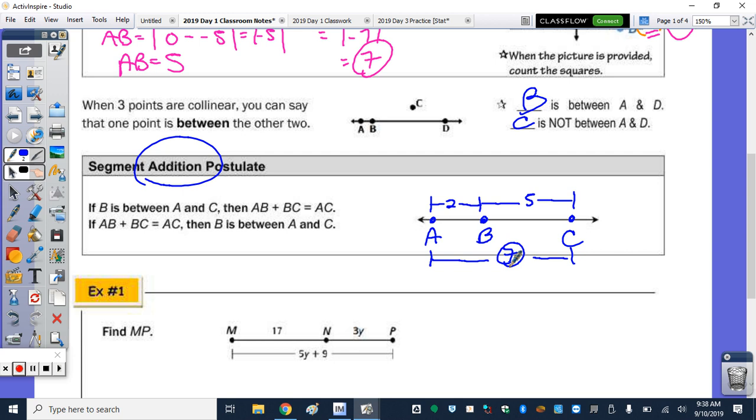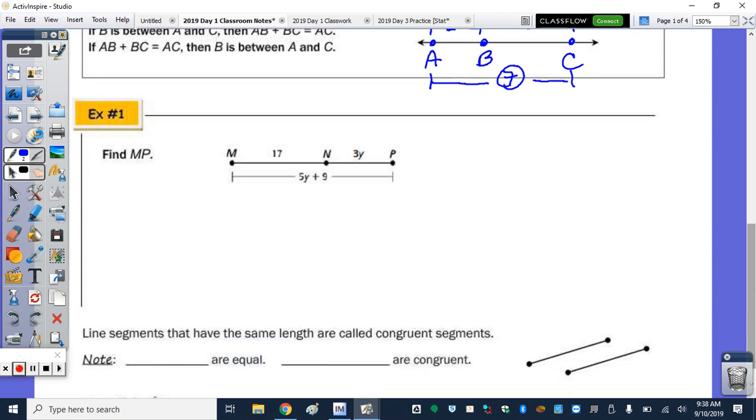If you look at that first example, I'm going to give you a minute to come up with the equation that we would use to find length mp. In order to find length mp, which is the length of the whole segment, we need to know y. So what would be the equation that we would write in order to solve for y, to then therefore substitute in to find length mp? So we have the whole length. The whole length from m to p algebraically is 5y plus 9. So the whole, 5y plus 9, equals the sum of the parts. So the two parts, one is mn, which is 17, and the other part is np, which is 3y.